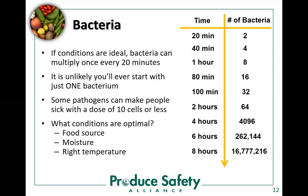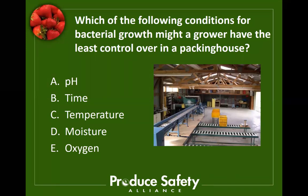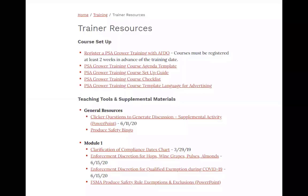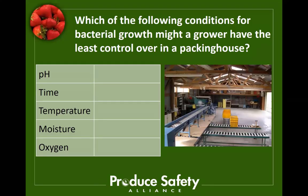Now that we've covered basic info about bacteria, viruses, and parasites, you may want to ask a question to make sure growers caught some of those important details — for example, asking them to think about controlling conditions that bacteria need to survive and multiply. PSA has created a set of slides on our trainer resources page called 'clicker questions,' intended to facilitate this kind of thinking and discussion. Before COVID, many trainers were using them with handheld clickers for anonymous voting. Now that we're teaching remotely, you may want to alter these slides for use with Zoom's annotate tool. Let's take a minute and practice using that annotate tool.